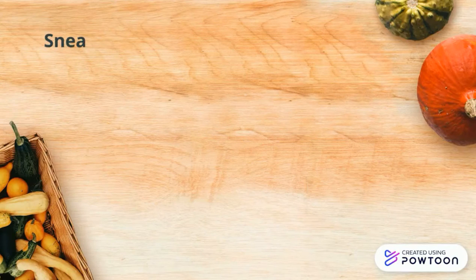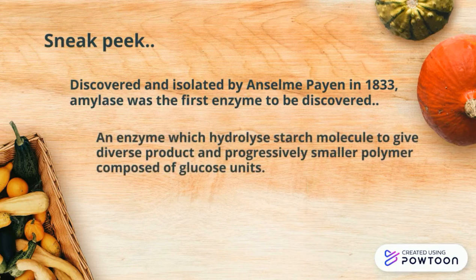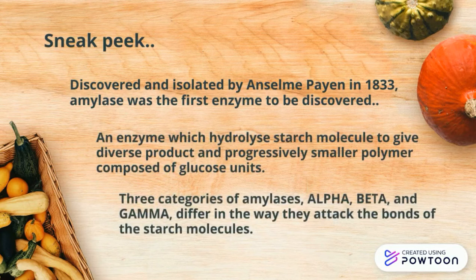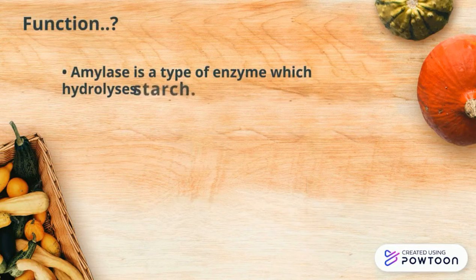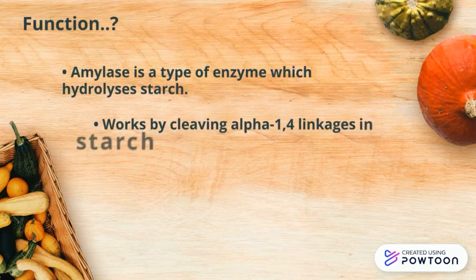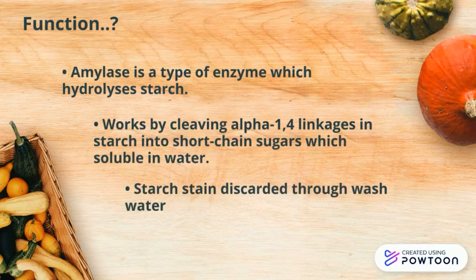Amylase was discovered by Anselme Payen in 1833. This enzyme can break bigger starch molecules into smaller molecules. It has three groups: alpha, beta, and gamma. Amylase is a type of enzyme which hydrolyzes starch. Alpha-amylase, one of the degradation enzymes, is usually preferred in laundry as it cleaves the interior alpha-1,4 linkages of starch into short-chain sugars which are water-soluble.